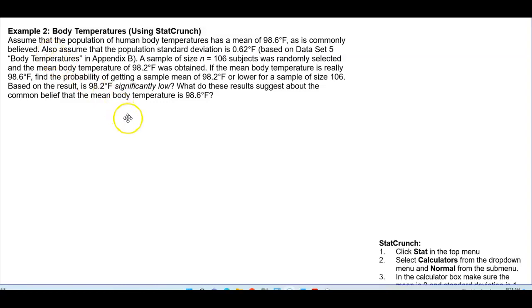Example 2: Body Temperatures using StatCrunch. Assume that the population of human body temperatures has a mean of 98.6 degrees Fahrenheit, as is commonly believed.